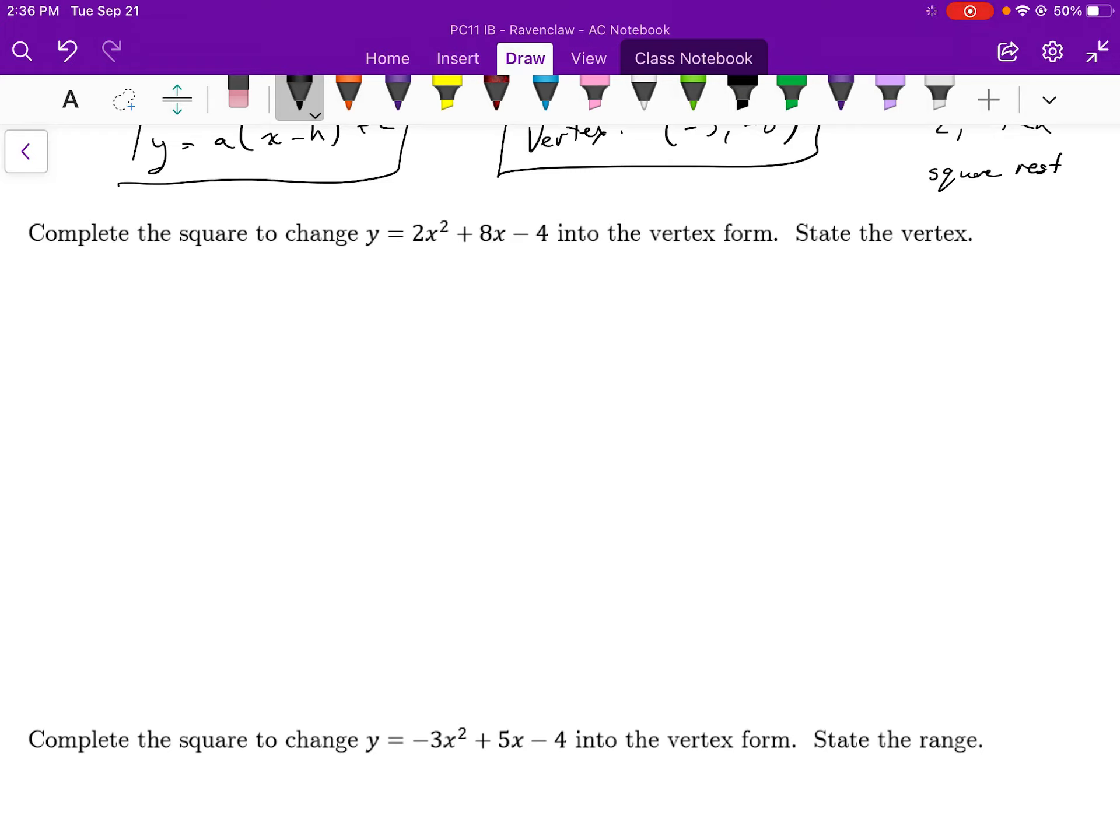Complete the square to change y equals 2x squared plus 8x minus 4 into vertex form. State the vertex. So now I'm just going to say this is what I'm shooting for: y equals a times x minus h squared plus k. I'm starting at y equals 2x squared plus 8x minus 4.